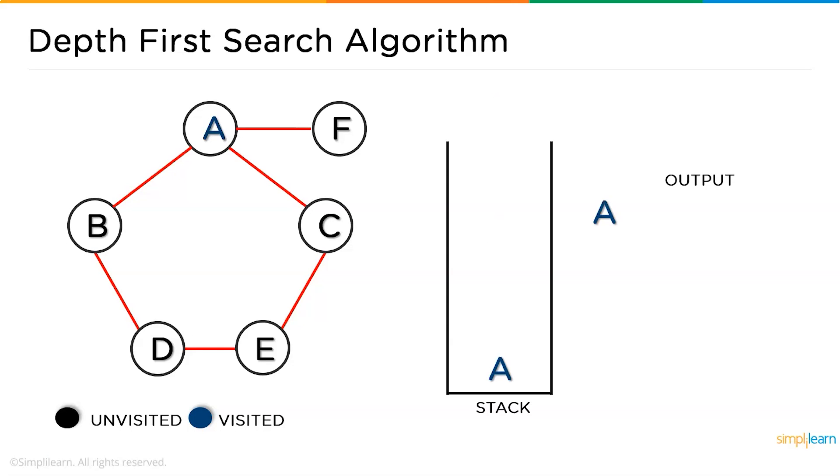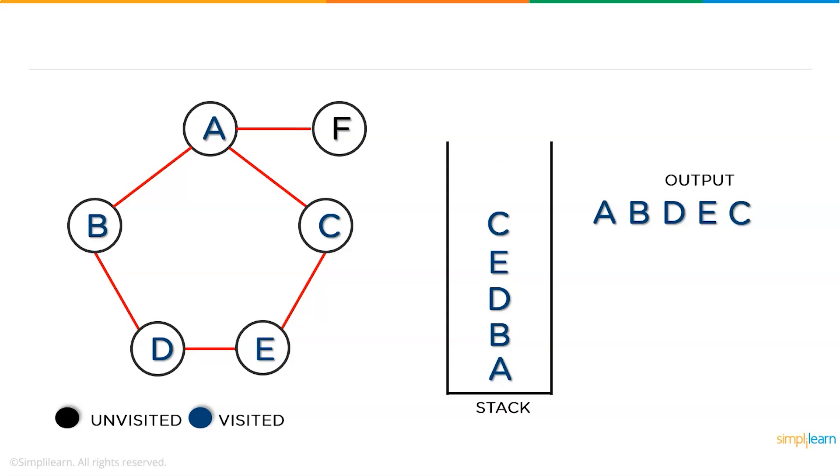Now we will begin with the first one, that is A. Followed by that, we will move ahead to B, then after B we will go through D, then after D we have E, next we have C, and last we have F. So that's how we traverse through the graph using the DFS algorithm.